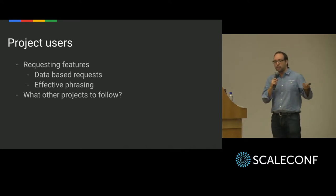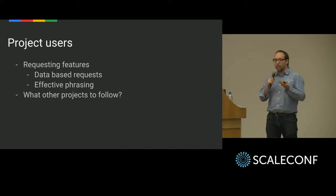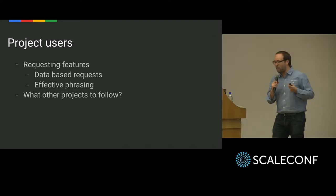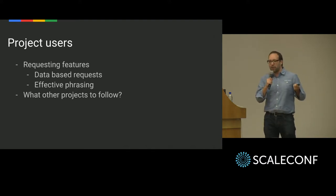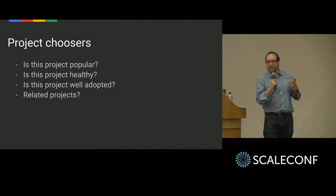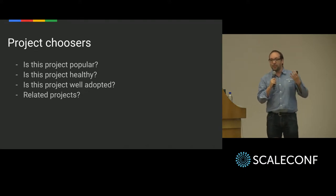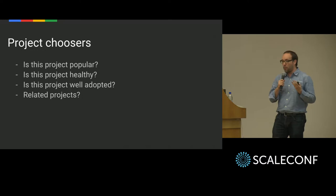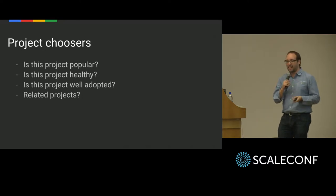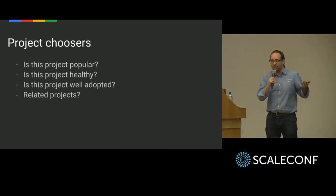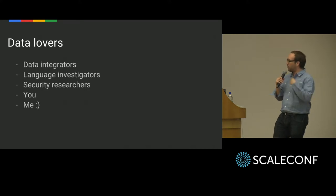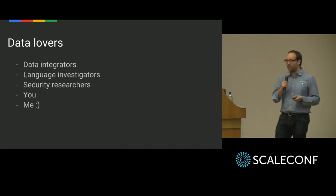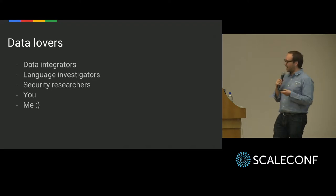Project users. If you use a project, you want to know the same things, but you also want to know how to request features, how to make good requests that will be acted upon, and what other projects you could be missing on. And before you become a project user, you are a project chooser. You have to choose a project — which one? If you are choosing a JavaScript library, there are hundreds of them. Which one is healthier? Which one is more active? Which one is the best one for you? And if you love data, this is a great place to find a lot of real data and start querying it.